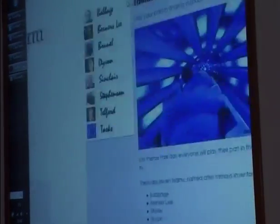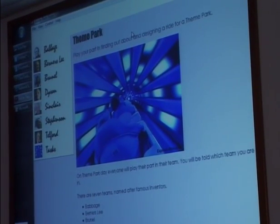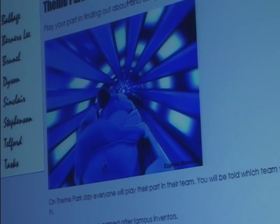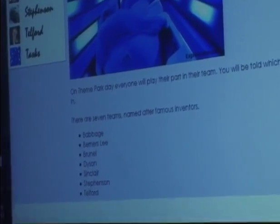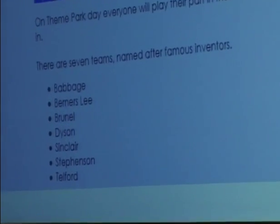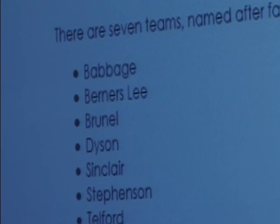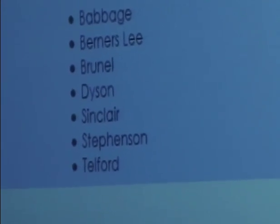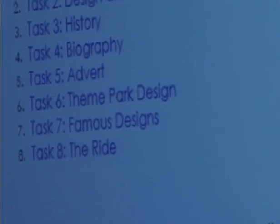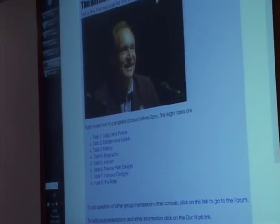This is the main page of the learning platform — the theme parks page — with 56 groups, in fact seven main groups, each named after an inventor. Seven teams, and each team had representatives doing eight different tasks. The original plan was that every school would have a team, but unfortunately some schools dropped out of that section. We still managed to have all groups working. Going into one of the groups — this is the Berners-Lee group — all groups are named after famous inventors. The Berners-Lee group has eight tasks to do: seven at home and one away.